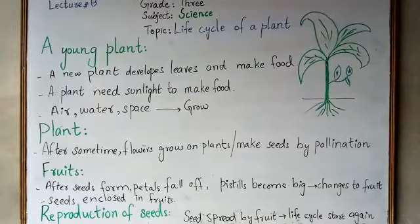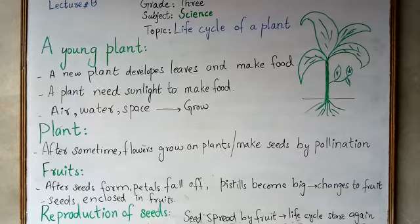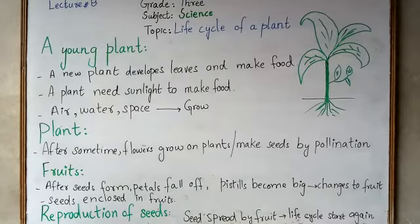Assalamu alaikum, Grade 3. Hopefully you are all fine. Today we are going to start our next topic: the life cycle of a plant. In the previous topic we studied the first stage of the life cycle of a plant — how a plant grows from a seed. A seed then develops into a seedling through germination. Germination is a process through which the right conditions convert the seed into a seedling.